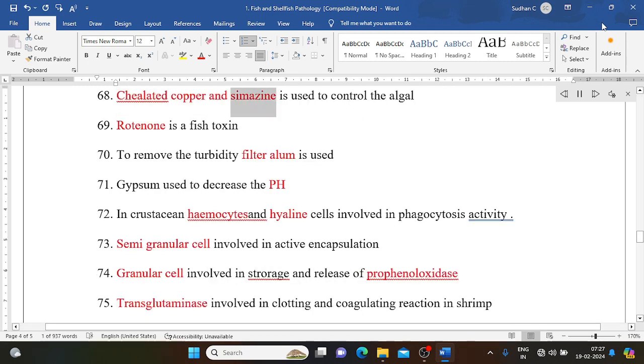Chelated copper and simazine is used to control the algae. Rotenone is a fish toxin. To remove the turbidity, filter alum is used. Gypsum used to decrease the pH.